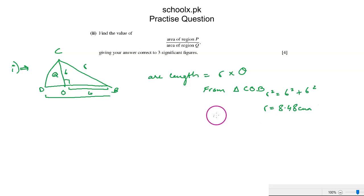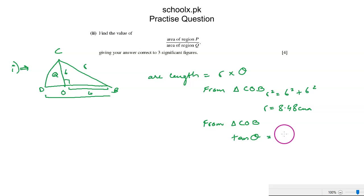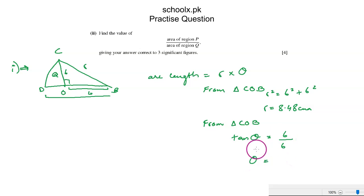Now finding θ, we use triangle COB with a trigonometric relation. tan(θ) equals opposite over adjacent, which is 6 over 6. So θ equals tan inverse of 1, which is π/4 radians.